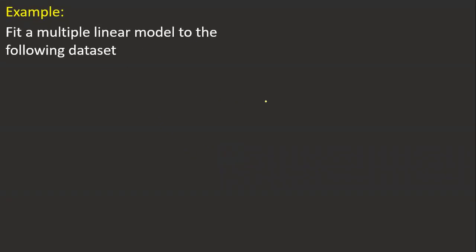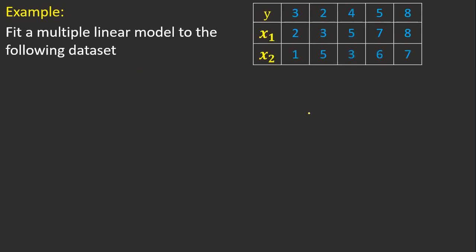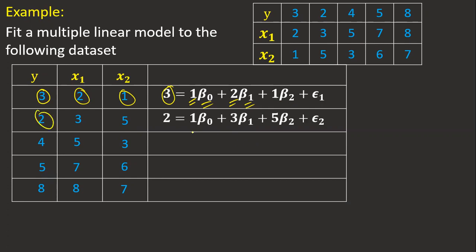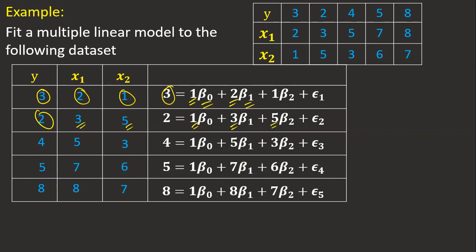The formula to solve for beta using the matrix method is: β = (X'X)⁻¹ · X'Y. First I find (X'X) inverse, then multiply by X'Y. For our example, we fit a multiple linear regression model to the given dataset. I write the Y matrix using the y-values, and the X matrix always has a column of ones for the intercept term β0, followed by the x1 and x2 values for each observation.